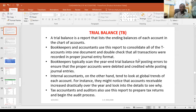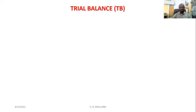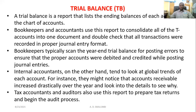We previously looked at the ledger — three types — and the accounts involved in all three types and how the books are balanced off. Today we look at the trial balance, which you can simply define as the collection of balances extracted from the ledger. All the balances extracted from the ledger make the trial balance. Bookkeepers and accountants normally use this report to consolidate all the accounts into one document.